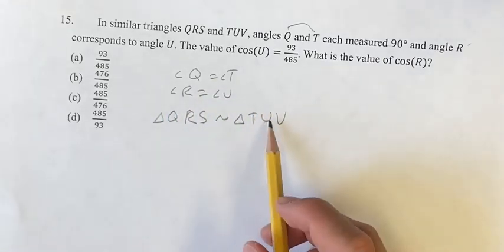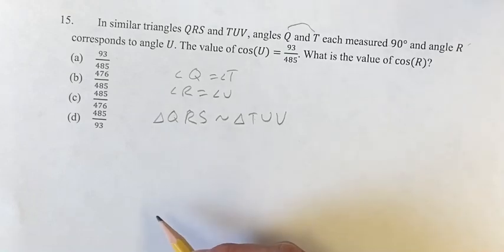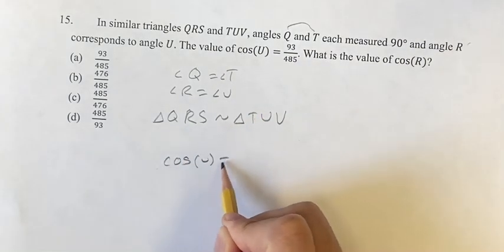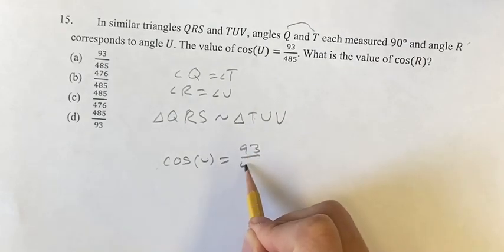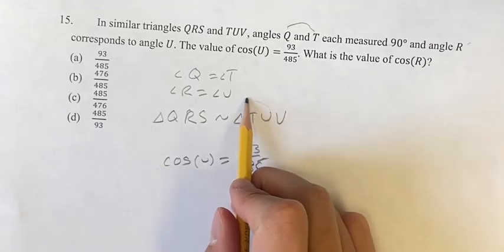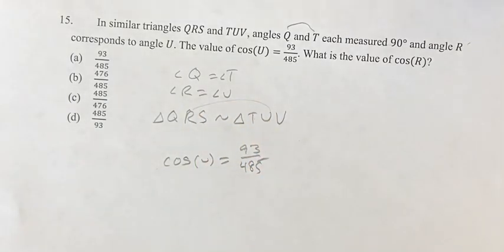R is equal to U, as we've seen, but also S is equal to V. Given that cosine of U is equal to 93 over 485, when we're trying to find the value of cosine R, we just have to look and see that these angles are corresponding to each other.